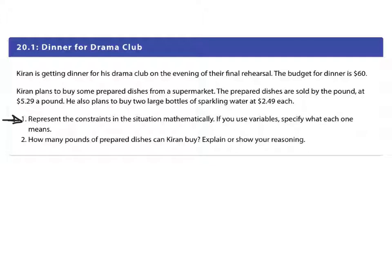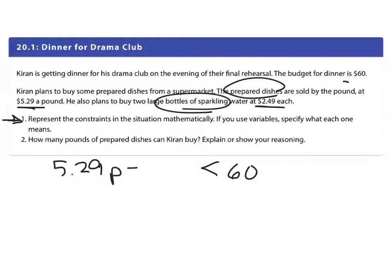First of all, we have prepared dishes $5.29 a pound and water at $2.49 a pound and the budget is sixty dollars, so we need to do sixty dollars or less. Let's do P for prepared dishes and B for bottles of water. We know how many bottles of water, so we can just do that.